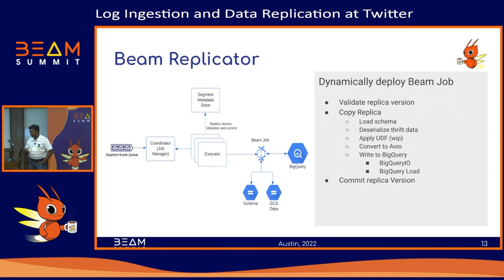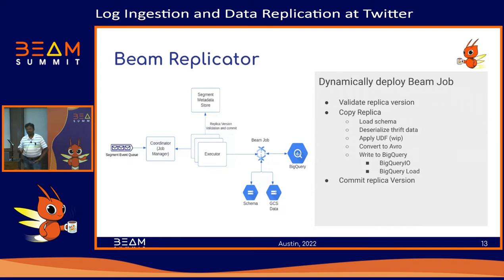Once the UDF converts data to the required format, we insert into BigQuery using the BigQuery IO connector for these batch jobs. Once the job is completed, we return to the metadata layer and commit the version.